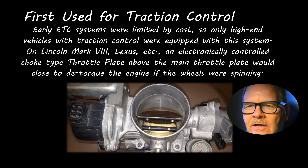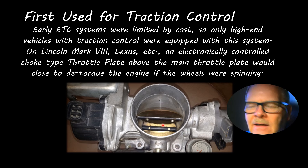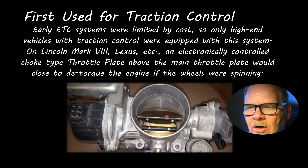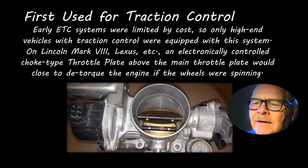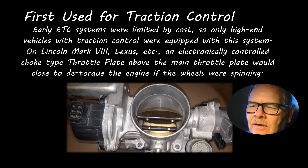Electronic throttle was first used for traction control in the early 90s and late 80s — Lincoln Mark 8, Lexus SC 300. On the SC 300, the throttle body had an extra throttle plate that looked like a choke — it was there to close off air going into the engine if you were spinning the wheels, as part of the traction control system. There are other ways to de-torque the engine electronically for traction control, but this throttle plate was totally electronically driven — you had no control over it. The bottom plate was still operated by a cable with a TP sensor.